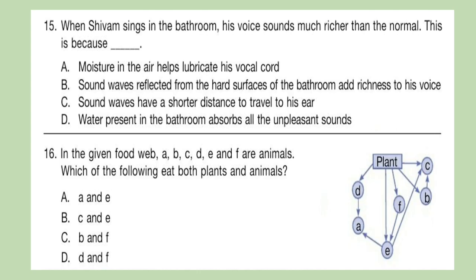Question 15: When Shivam sings in the bathroom, his voice sounds much richer than normal. This is because dash. You can pause the video if you need more time to read the options. Question 16: In the given food web, A, B, C, D, E and F are animals. Which of the following eat both plants and animals? Look at the options and select your answer carefully.